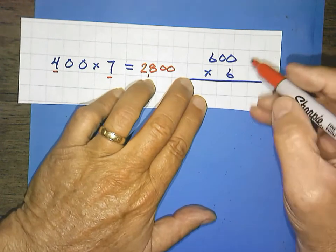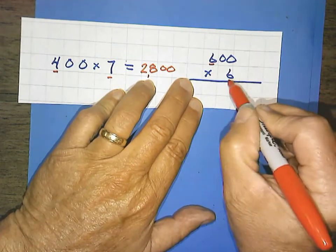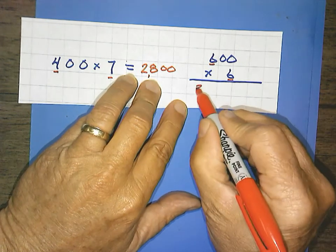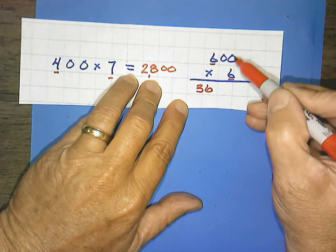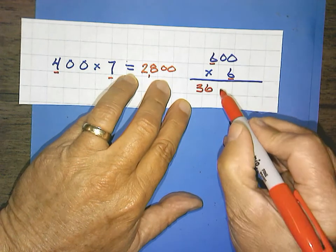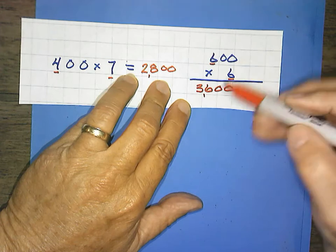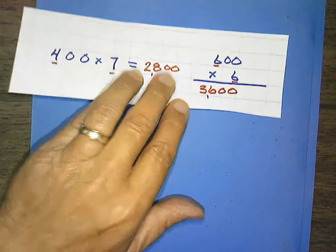600 times 6. Take your solids. 6 times 6 is 36. Count your zeros. 1, 2. And write your zeros. 1, 2. So 600 times 6 would equal 3,600.